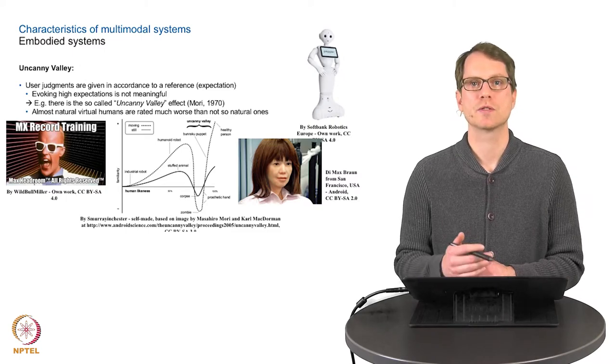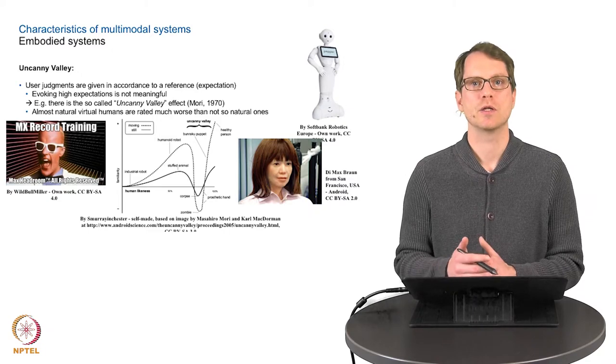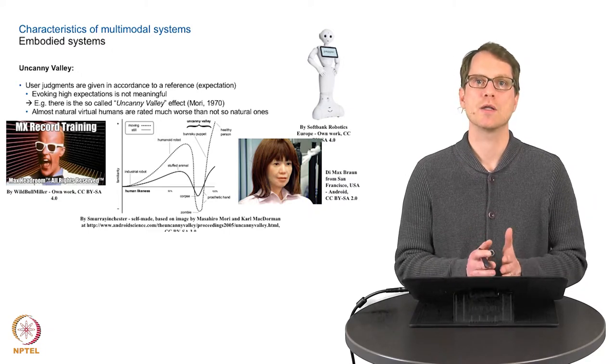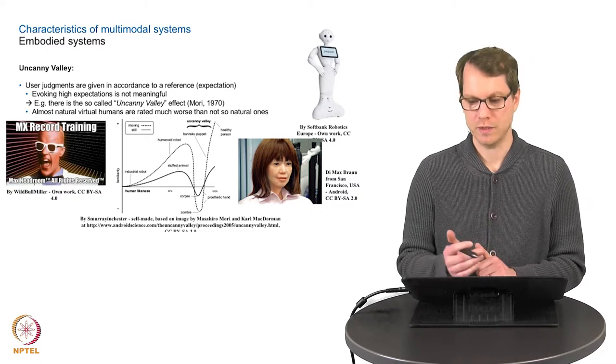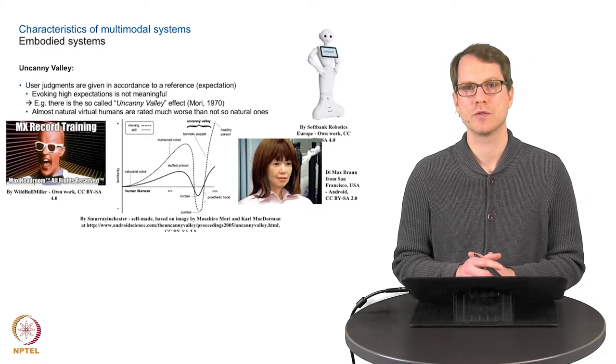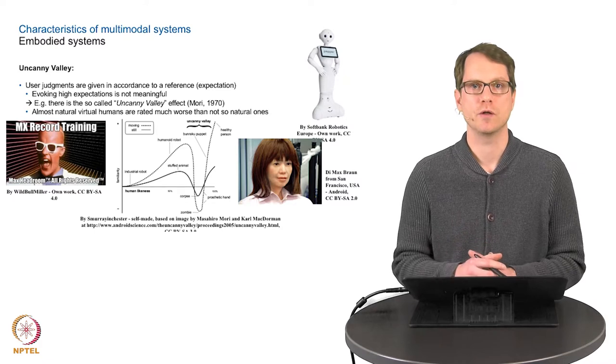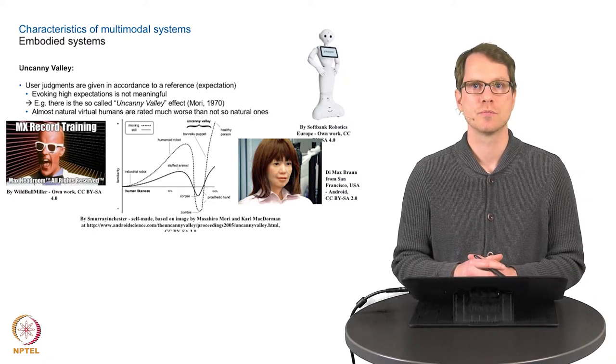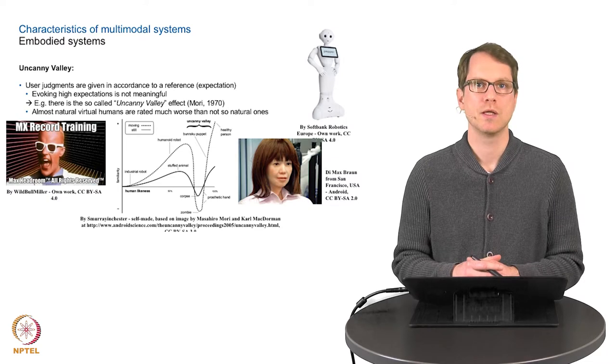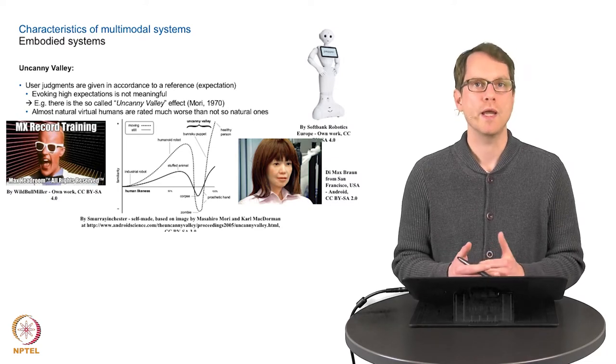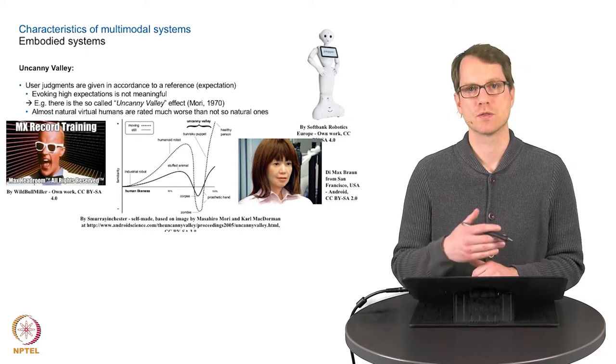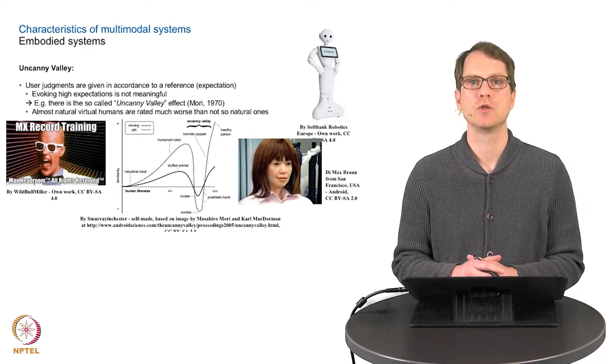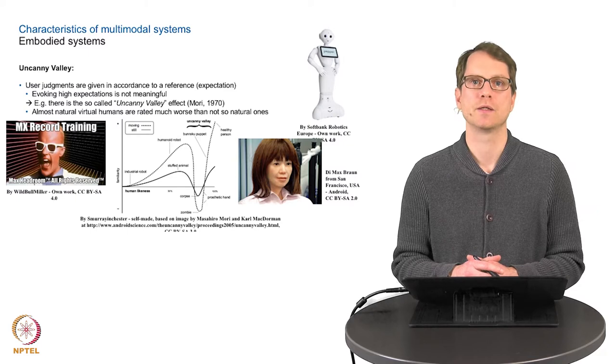In order to prevent this uncanny valley we can either stop at the beginning of the uncanny valley, and you can see the white Pepper robot as one kind of attempt to do this. But also animals or cartoon characters are a good way to prevent the uncanny valley. Or we can skip this valley and really try to make a truly human-like interface.